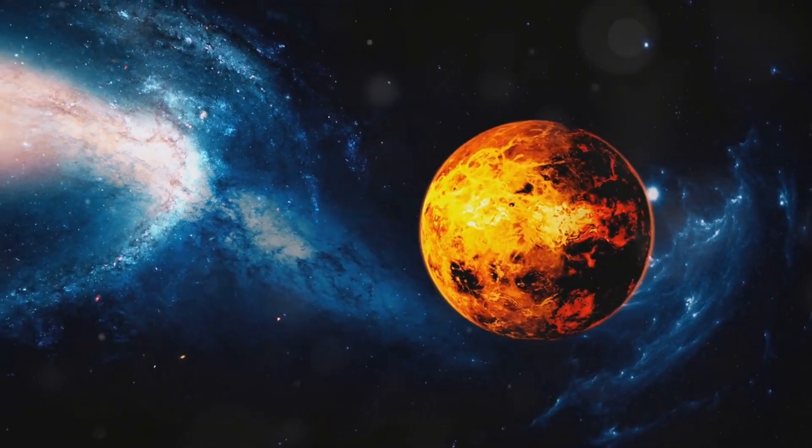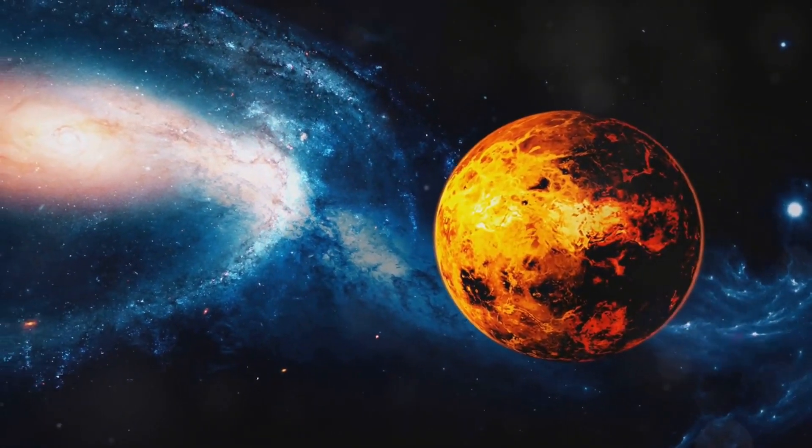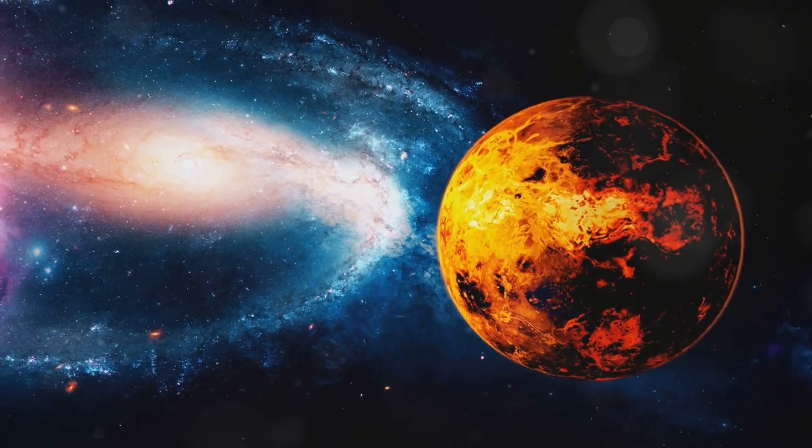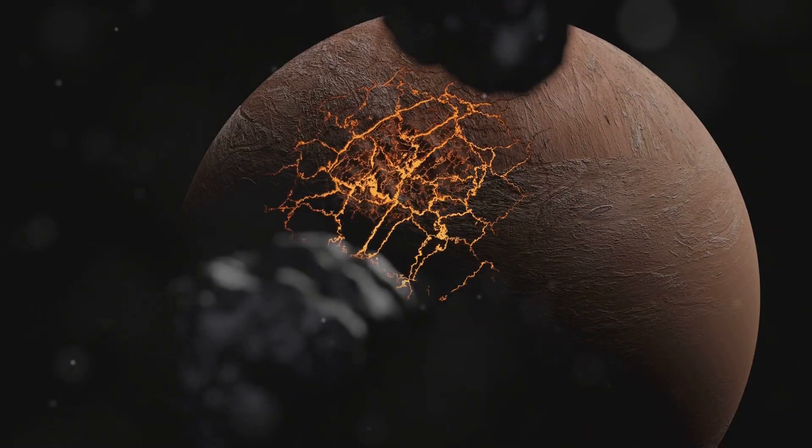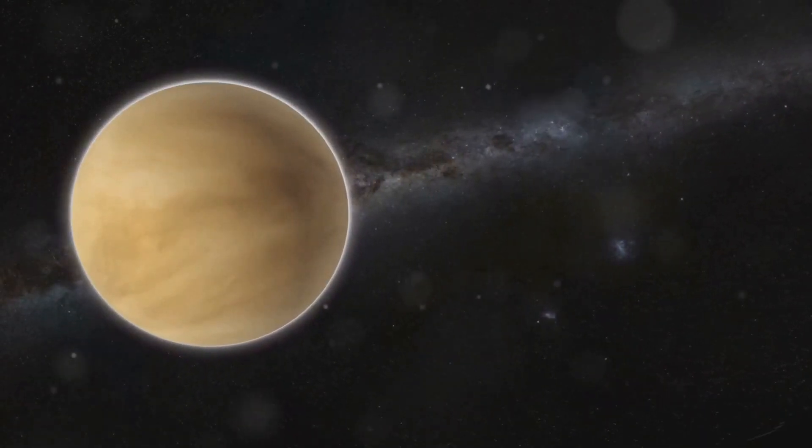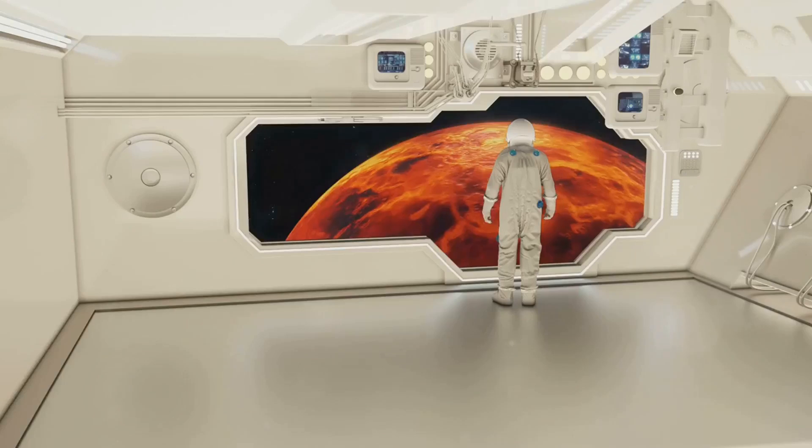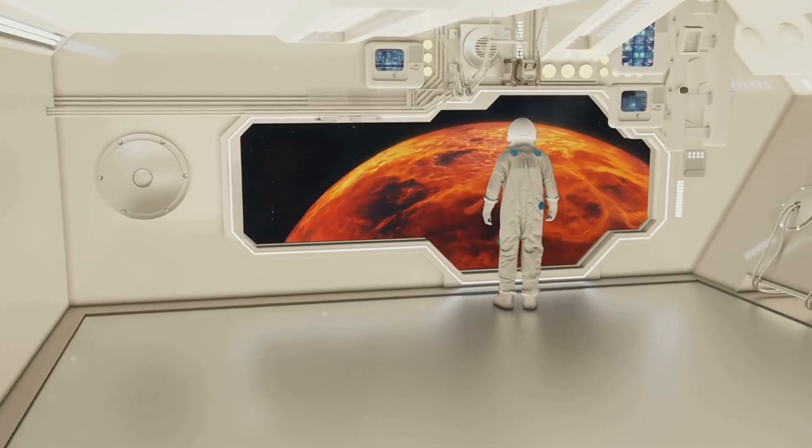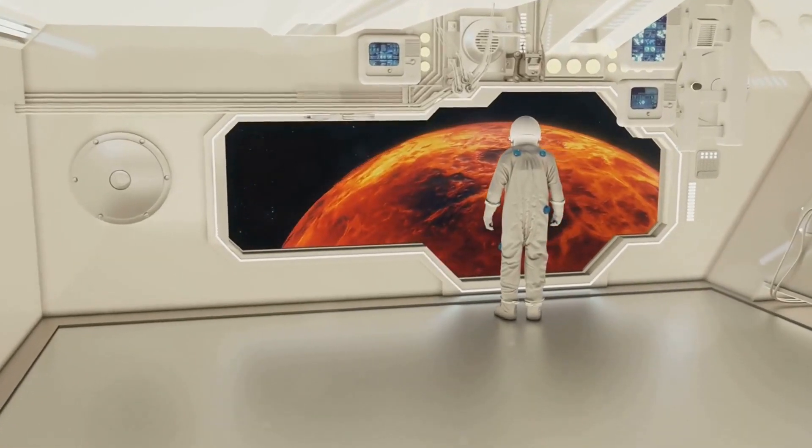Imagine we're in a greenhouse, but instead of a few plants, there are tons of greenhouse gases. The surface temperature of Venus is about 465 degrees Celsius, hot enough to melt lead. It's like trying to survive in a sauna cranked to maximum heat with no way to escape.